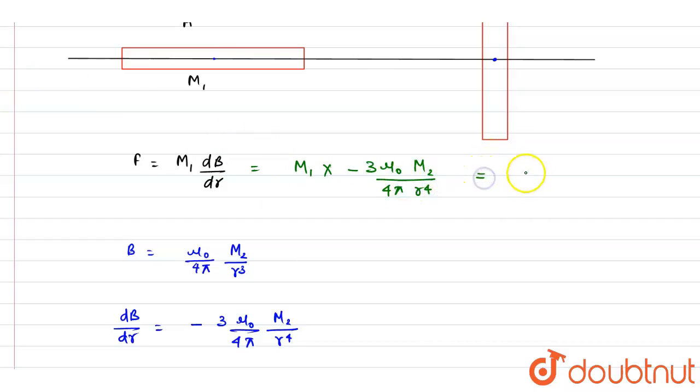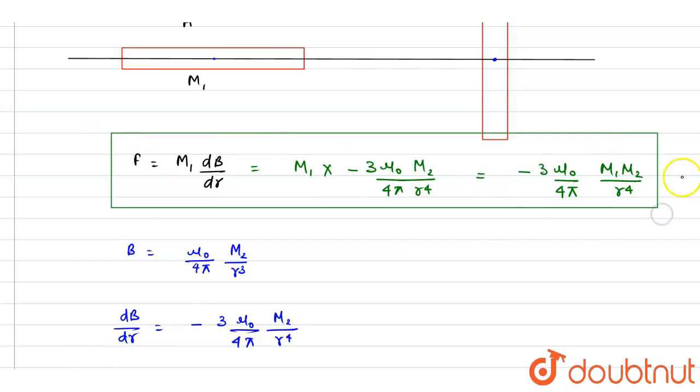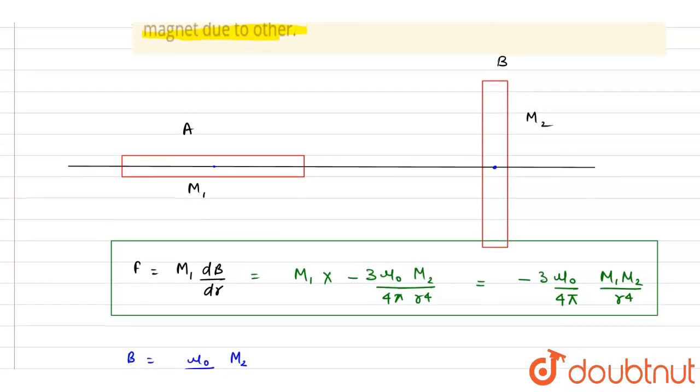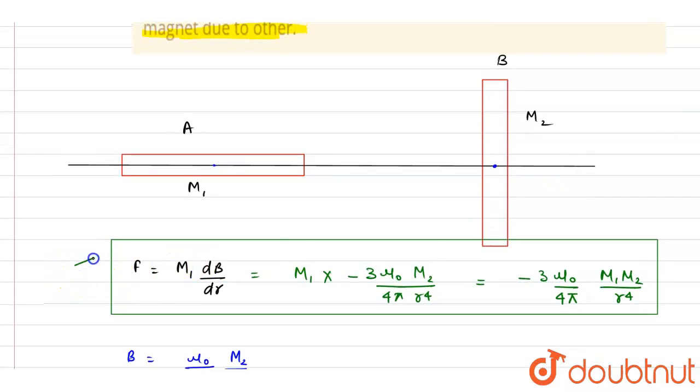So the force here will be minus mu naught by 4 pi M1 M2 by r to the power 4. This will be the force on them by each other and the answer of this question.